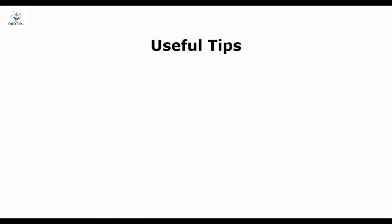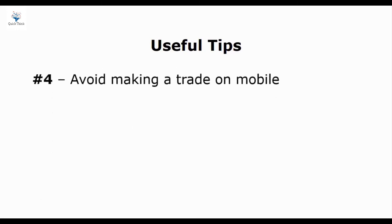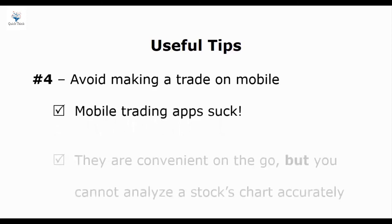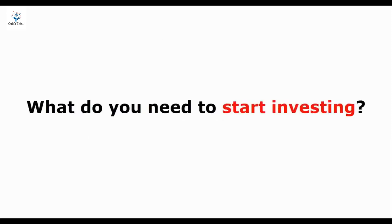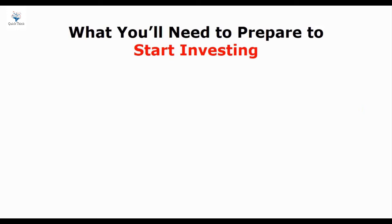And the final tip: you should avoid making a trade on mobile. Mobile trading sucks — I agree that some mobile trading apps are convenient on the go, but the downside is that you can't analyze a stock's chart accurately. You can't use some technical indicators properly, and that will potentially lead to a bad investment decision. Sometimes you'll face connection issues, so make sure you won't make a trade when using mobile. You should only use mobile trading apps for monitoring your stock's performance and reading market news. So to wrap everything up: what do you need to start investing? First, education — you must invest in your education. You'll need $10,000 to start investing, then add $300 to $500 each month to build up your portfolio.